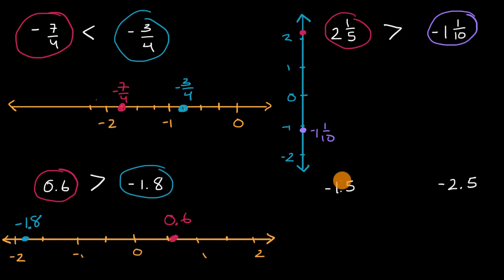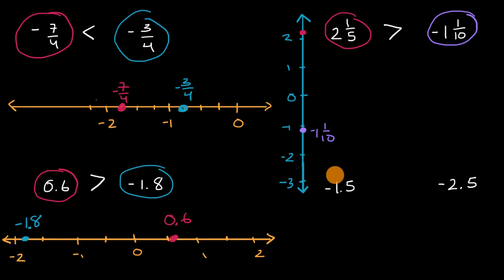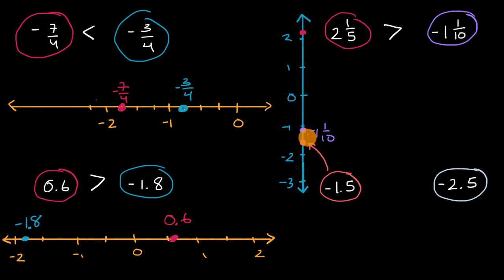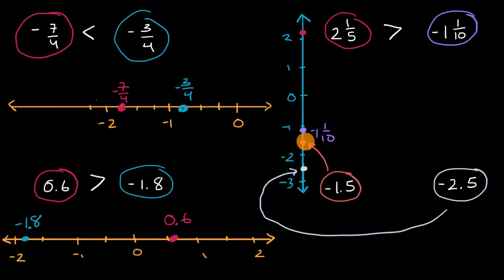Let's do one last example, comparing these two numbers. I can extend this number line right over here — I should be able to fit both of these numbers. This is negative three right over here. So where would negative 1.5 sit? We're going below zero — that's negative one, and negative 1.5 would be another half, right in between negative one and negative two. And where would negative 2.5 be? We go negative one, negative two, and then another half — so this right over here is negative 2.5. We can see very clearly that negative 1.5 is higher than negative 2.5, so it is also greater.